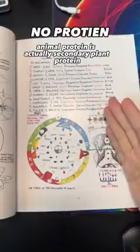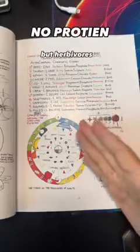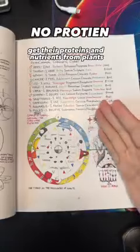Animal protein is actually secondary plant protein. Carnivores get their proteins and nutrients from other animals, but herbivores get their proteins and nutrients from plants.